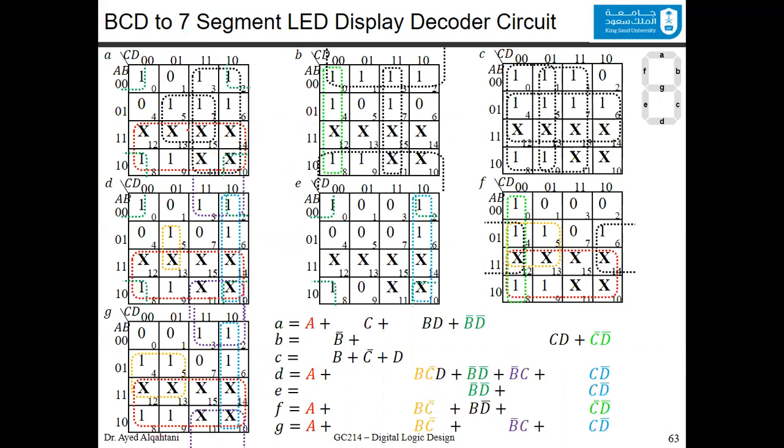After that, you can use the selection rule that we studied and do the optimization for each one of those segments. For example, if we take D, you can see that we can have those eight together, which corresponds to A. We can have this purple one, which is B bar C. We can have the light blue one as C D bar. We also have the corners, which are the light green ones as B bar D bar. And we will be left over with this one. We will include it with the don't care to generate B C bar D.